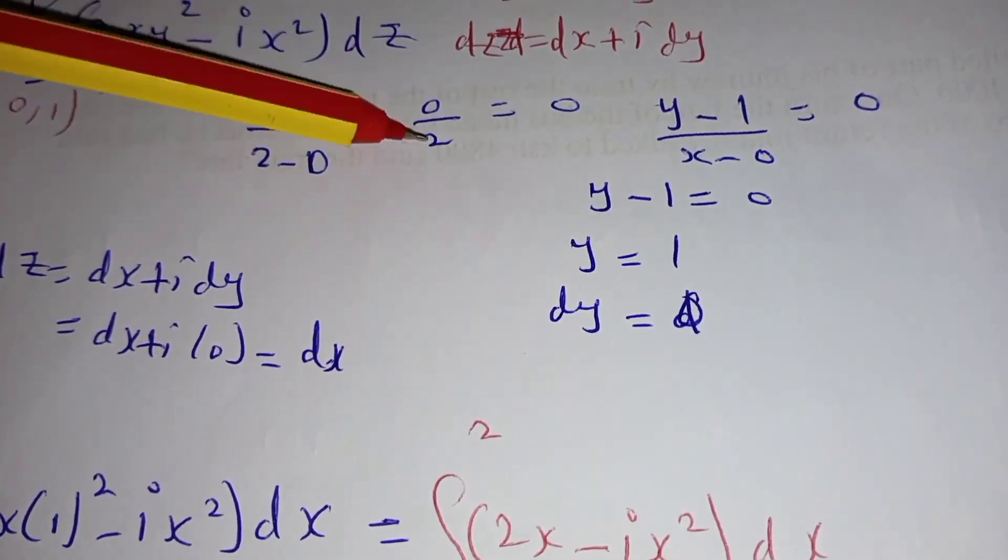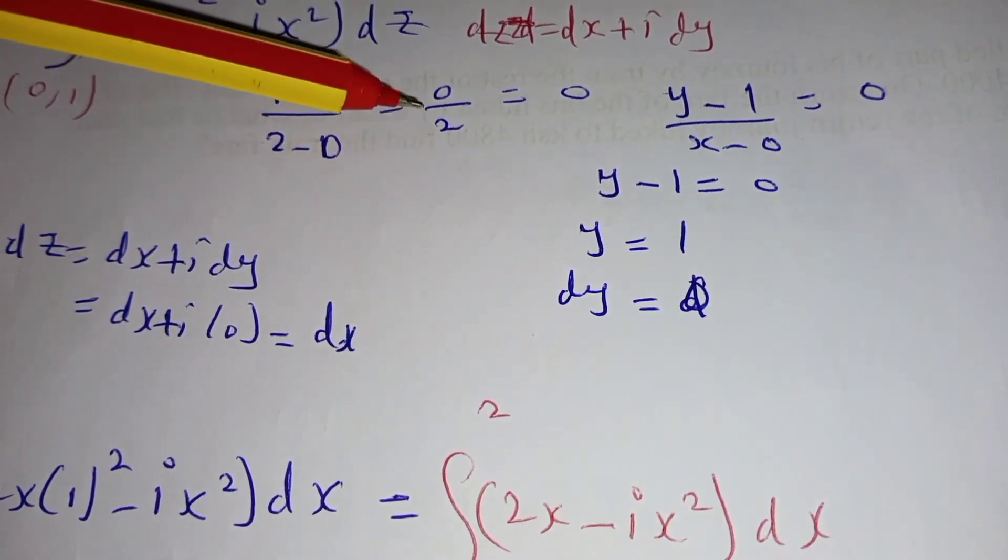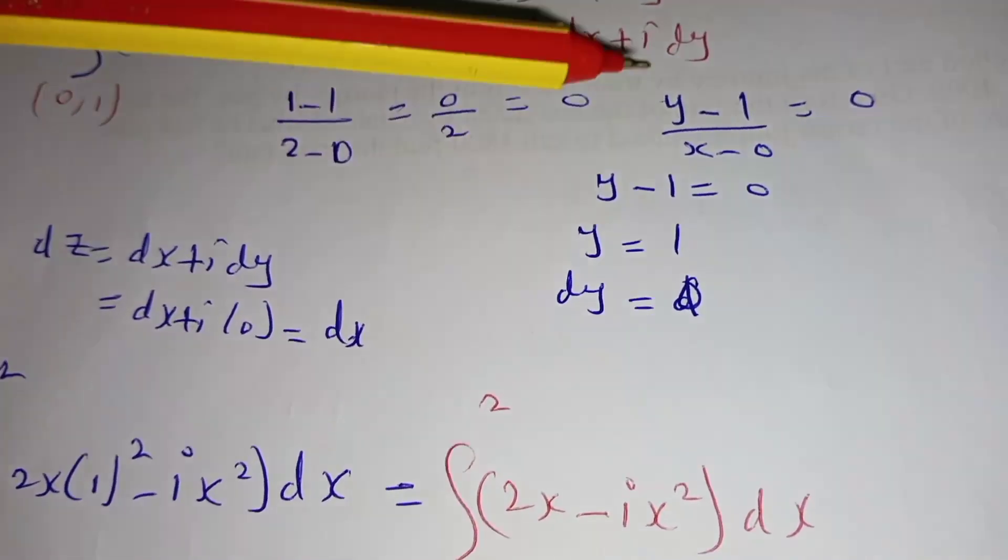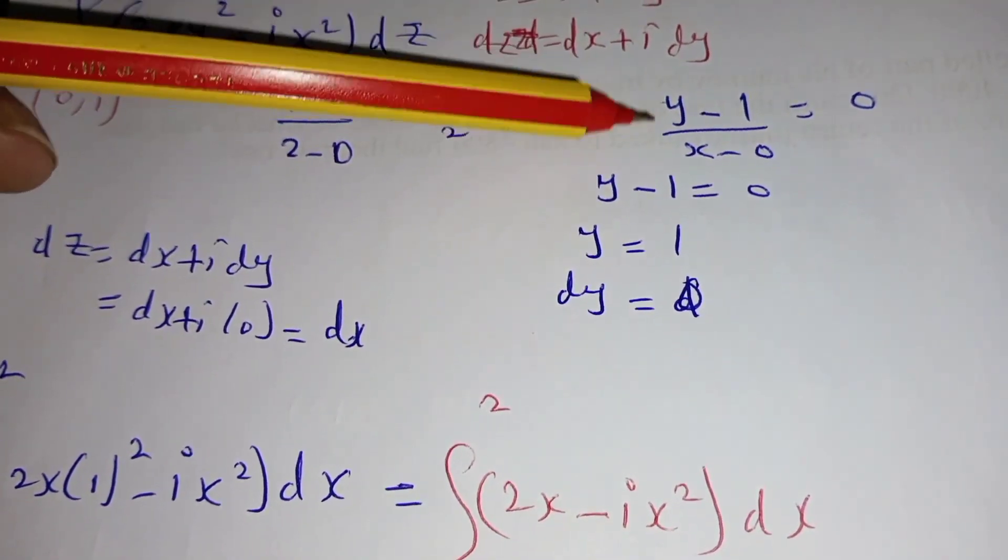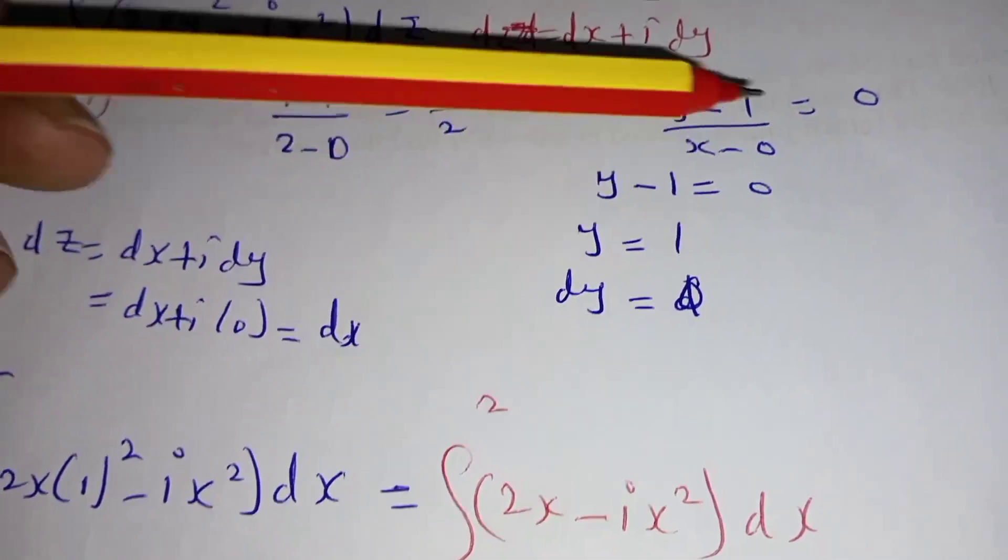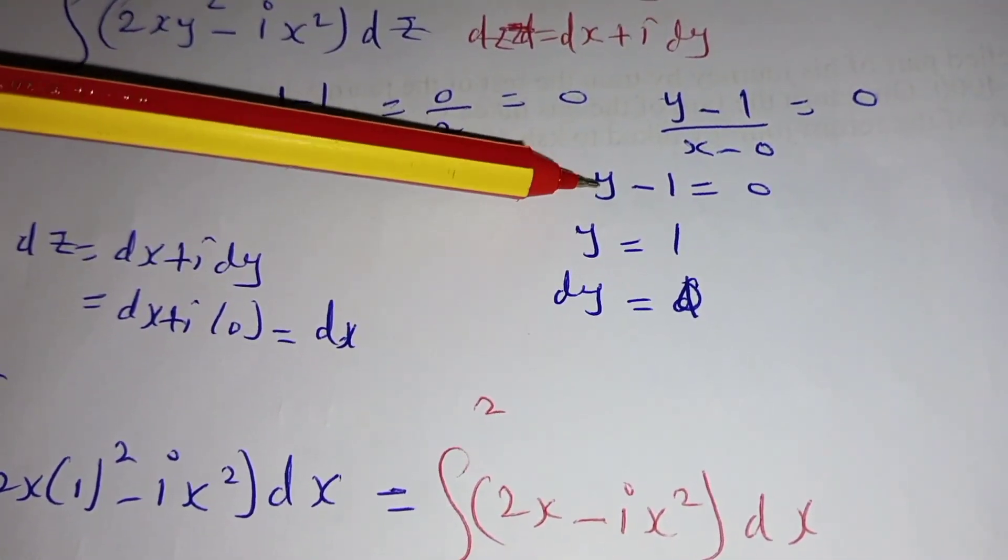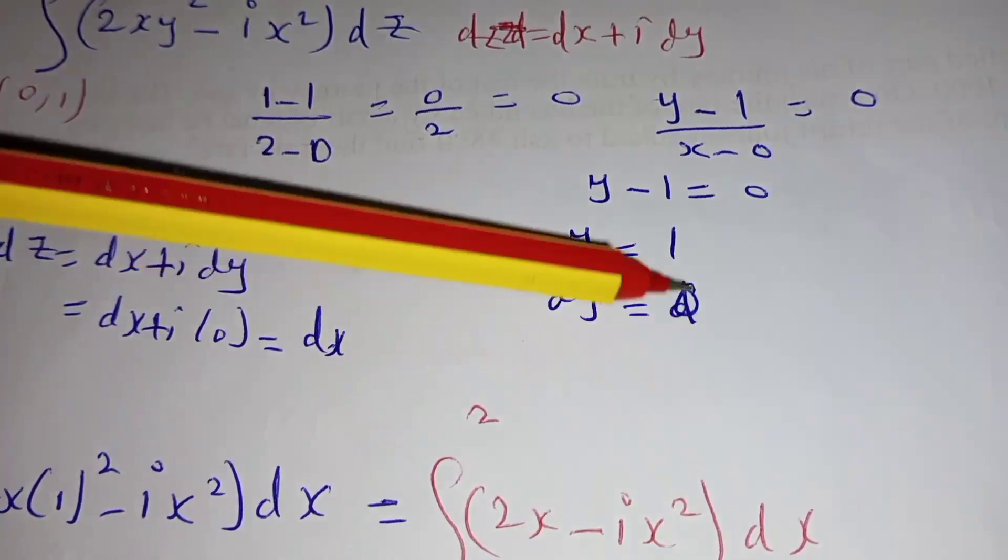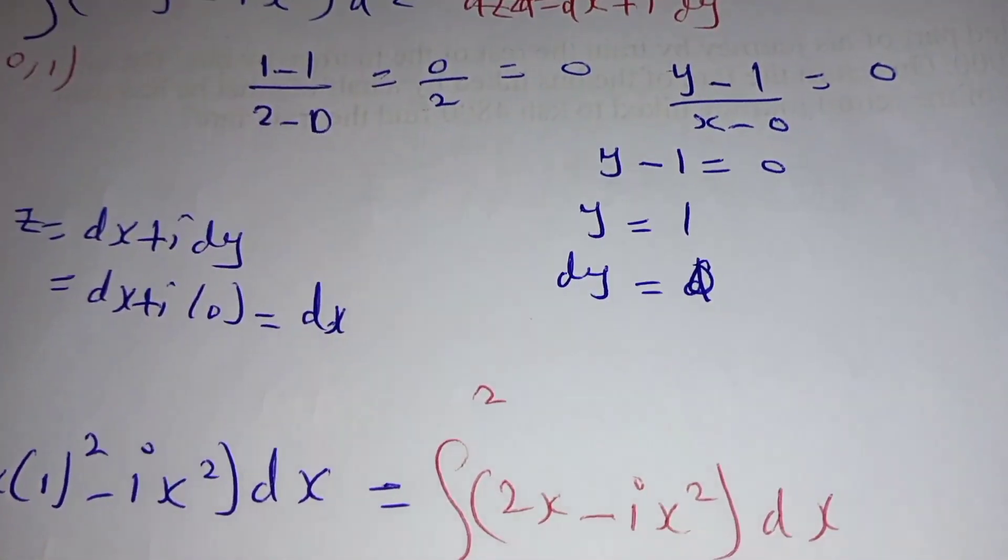2 minus 0 is 2, 0 divided by 2 is 0. Then we pick any point: (y - 1)/(x - 0) = 0, meaning y - 1 = 0, meaning dy = 0 when we differentiate.